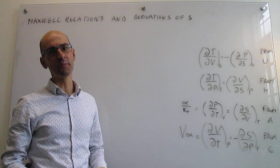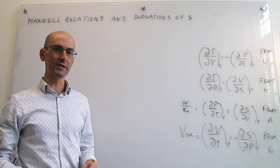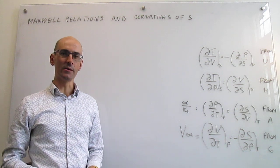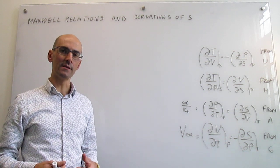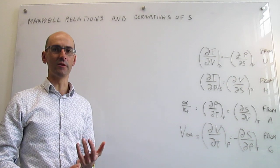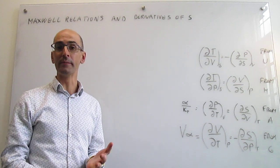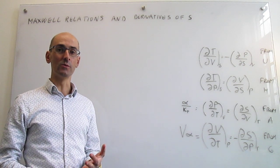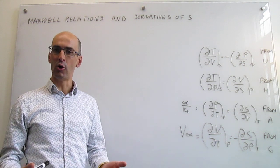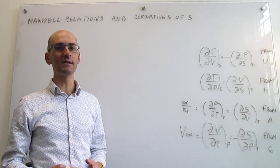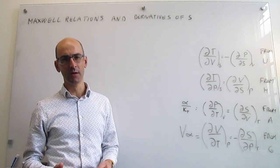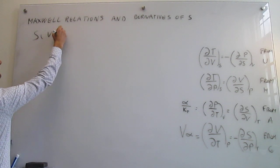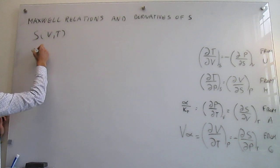In this video we learn how the entropy depends on volume, pressure, and temperature using Maxwell relations. In prior videos we have examined the sensitivity of internal energy with respect to volume and temperature, and then enthalpy with respect to pressure and temperature. Now we're ready to tease out how the entropy depends on those three variables that are easy to control in the laboratory — writing entropy as a function of either volume and temperature or pressure and temperature.